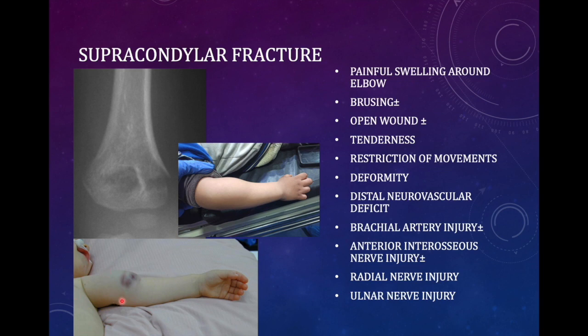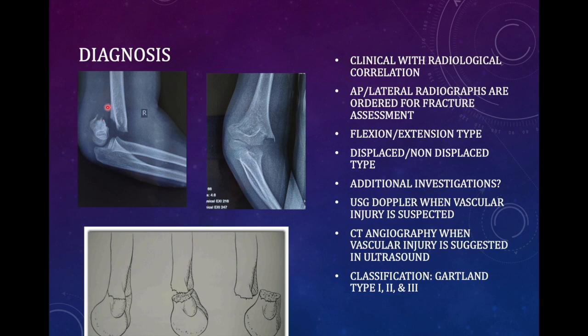In this picture you can see the anterior part of the arm is prominent while the posterior part is also prominent posteriorly, meaning the distal fragment has gone back — this is an extension type of injury. On lateral radiograph, you can see the distal fragment has gone back, confirming extension type. On the AP view, you can see whether there is medial or lateral migration of the distal fragment.